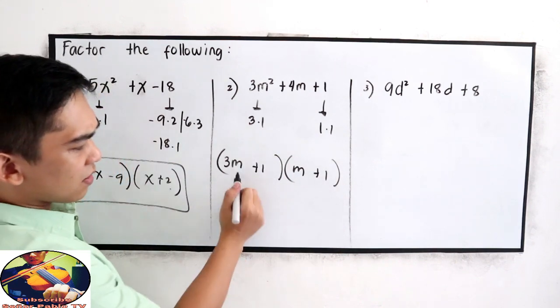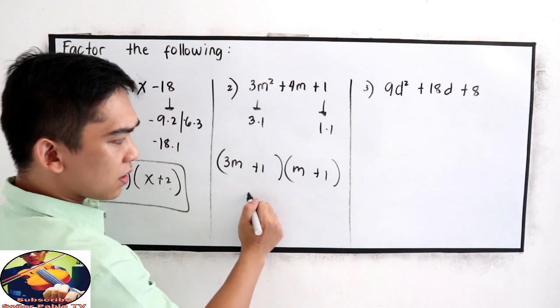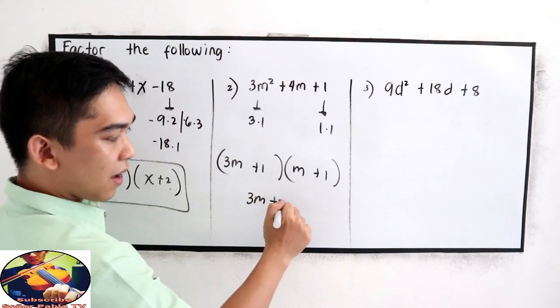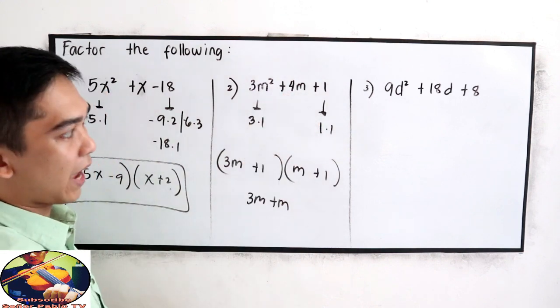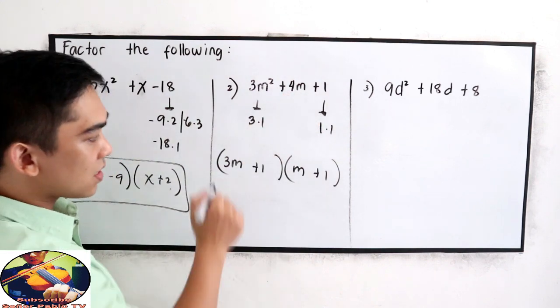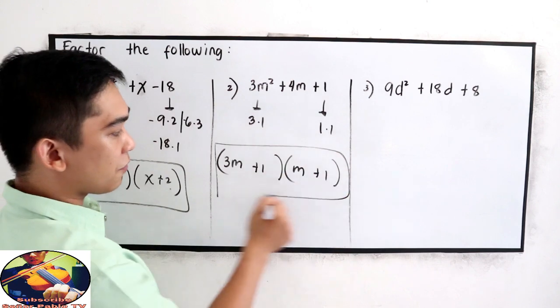Now let's check, 3m times 1, that is 3m, 1 times m, that is m. Add, that is 4m. Now, this is our factored form, or our final answer.